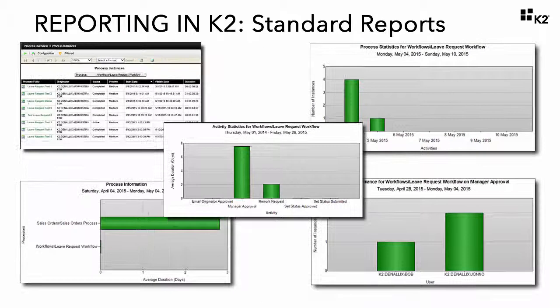K2 has five standard reports that provide a well-rounded overview of what is occurring within your workflows. Standard reports can be used for business intelligence and will include information such as statistical analysis, or they may contain historical reporting which may include number of processes started in a given time frame, and you can look at peak usage.